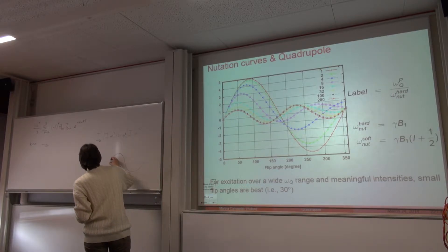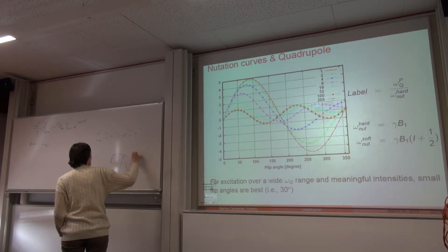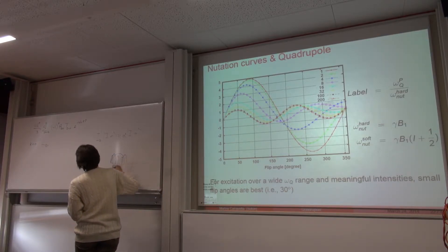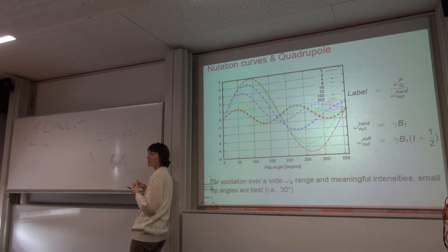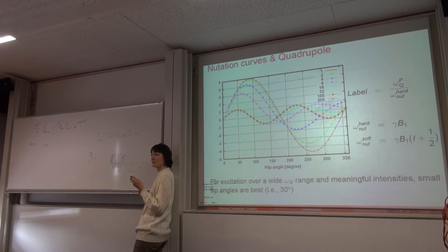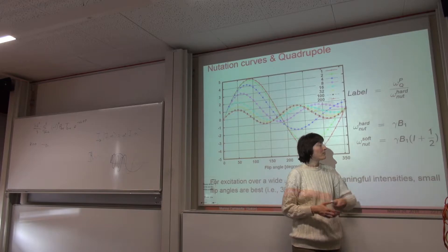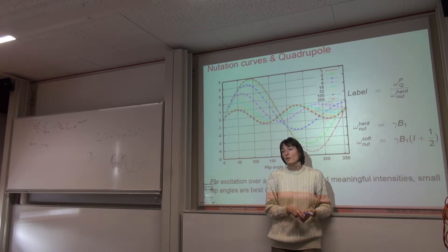For a soft pulse, the nutation oscillation is slow and matches between liquid and solid. For a hard pulse the oscillation is much faster on the solid. If you have spin-3/2, that's 3/2 + 1/2 = 2, so the pulse goes twice as fast. For spin-5/2, there could be a factor of 3 in apparent oscillation speed. So you might end up calibrating for 90 degrees and actually getting something much shorter than expected.